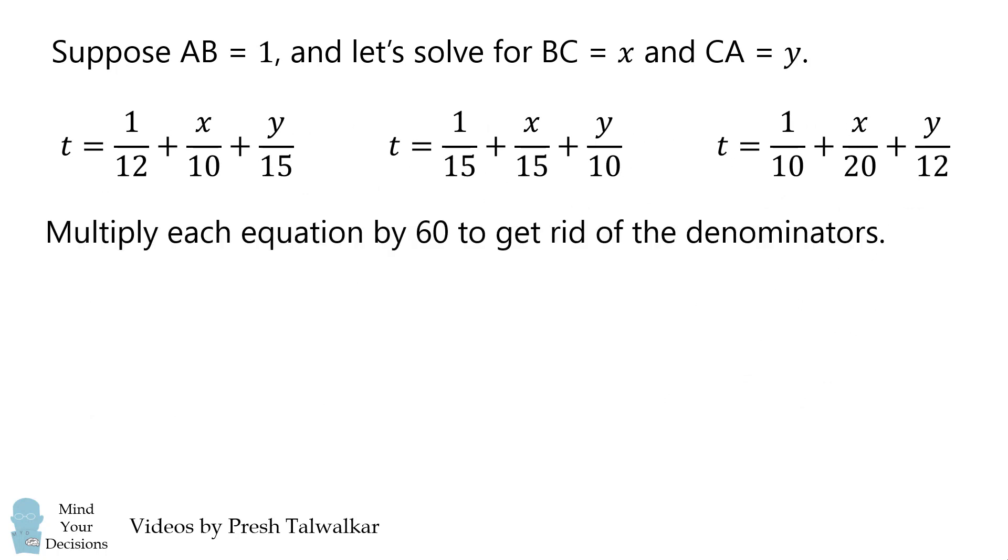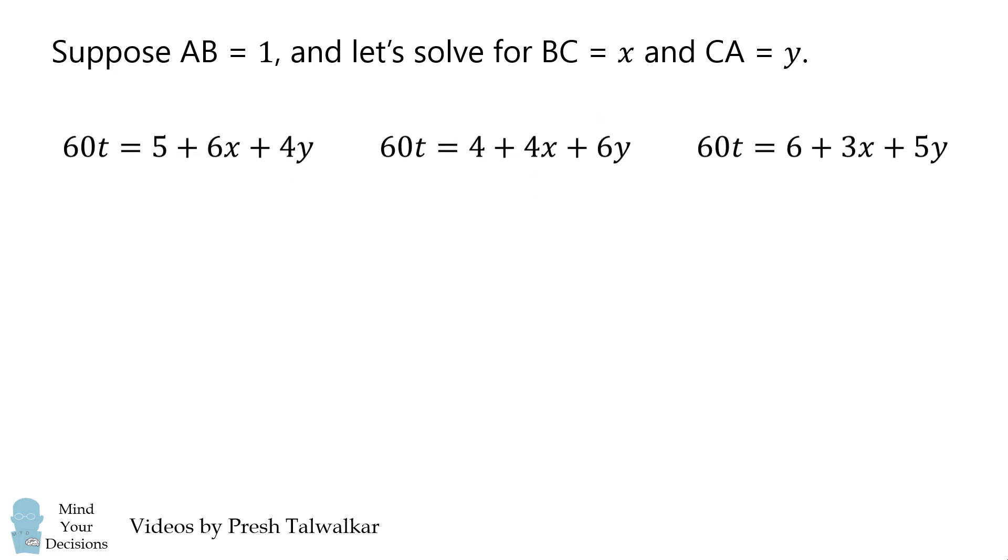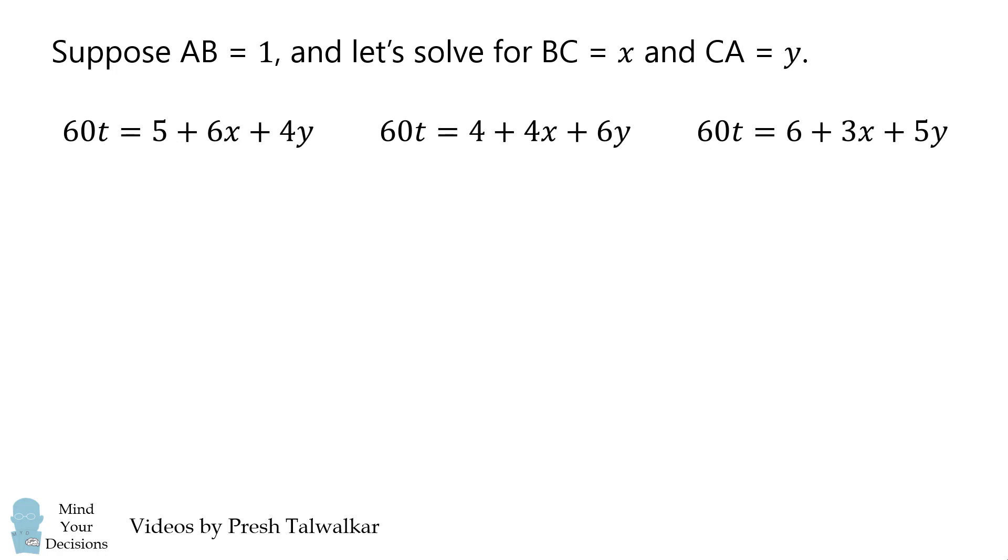To make this a little more manageable, let's multiply each equation by 60 to get rid of the denominators. We now have three equations that are all equal to 60t.